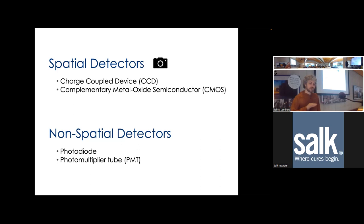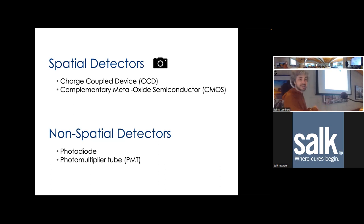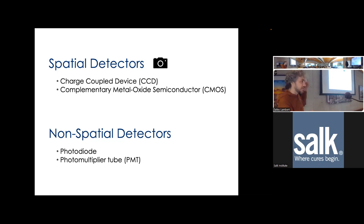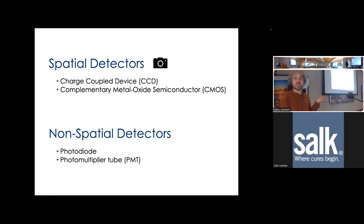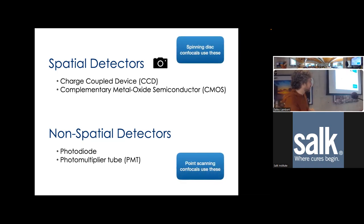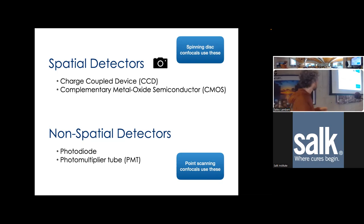As I give this lecture, I'm going to be talking about two broad classes of detectors. There are spatial detectors like cameras, and these generally fall into two categories: charged coupled devices and CMOS, or complementary metal oxide semiconductors. And then there are non-spatial detectors - essentially single pixel cameras. A photodiode is an example of that, and a PMT or photomultiplier tube is an example of that. These are mostly what we use with point scanning confocals, and we build up an image sequentially.